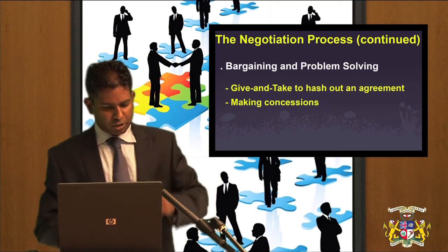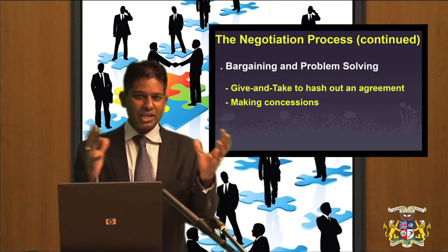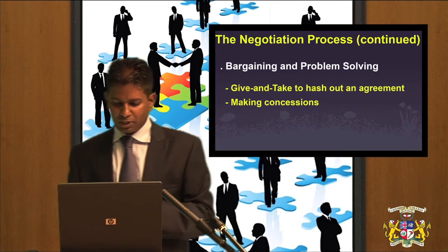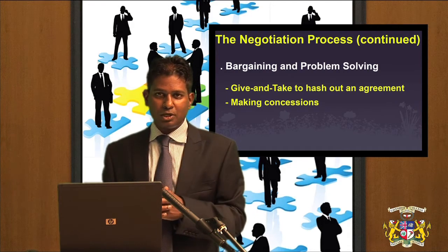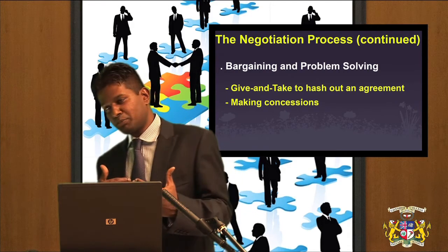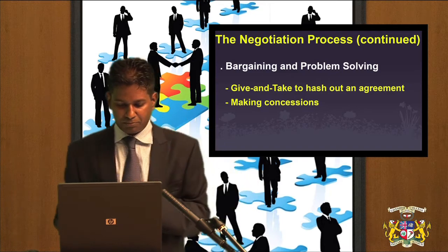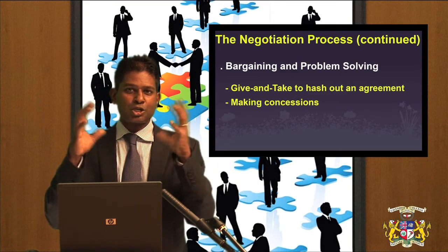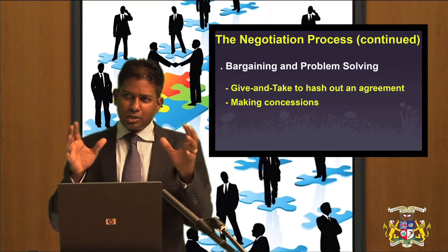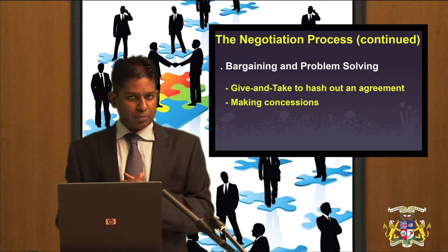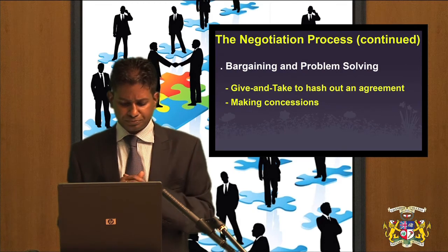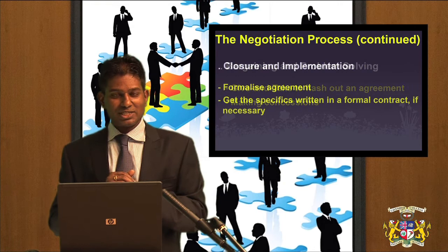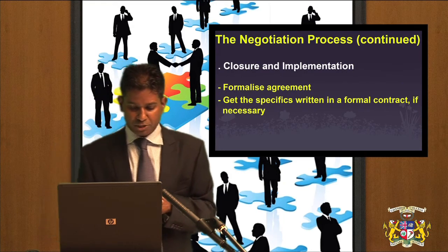The fourth stage in the negotiation process is bargaining and problem solving. The essence of negotiation is to give and take — reciprocity. You cannot get something from the other party unless you are willing to give some. In order to hash out an agreement, be willing to make concessions if and when possible. The last stage in the negotiation process is closure and implementation.